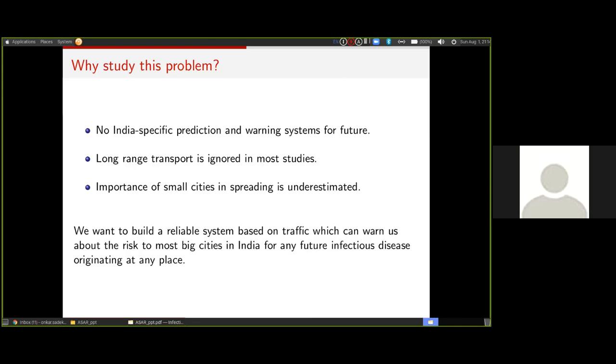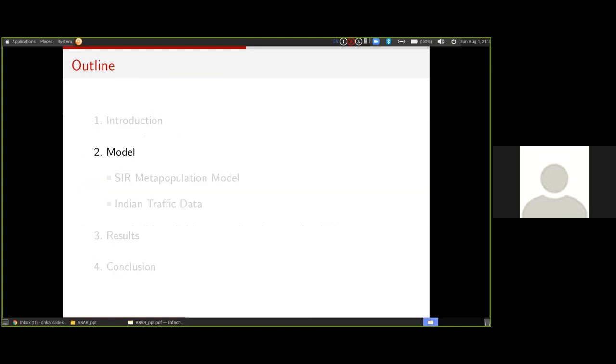Since this was the first of its kind, we decided to assume the simplest of the things, build the model, and see what the results are. Based on that, maybe we can change or tweak things around to make better predictions. But our basic goal was to just build a reliable system which could act as a zeroth order prediction system so that policymakers could make changes based on it.